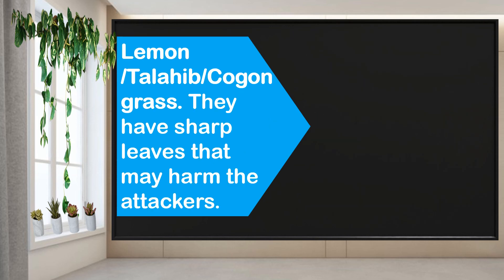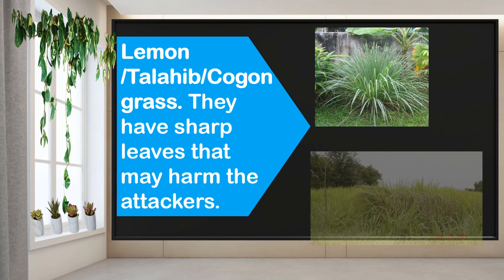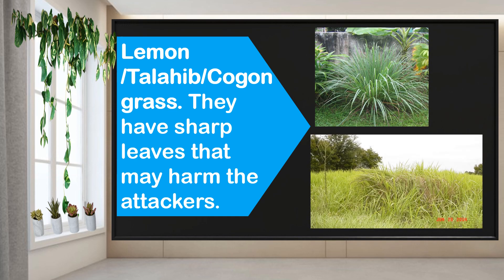Lemongrass and cogon or talahib — these grasses have sharp leaves that may harm attackers. So when you play along them, you might get some cuts or scratches.